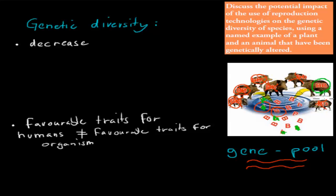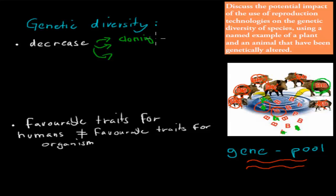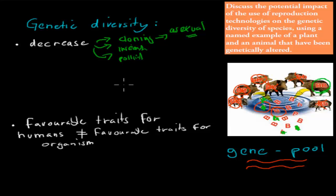Genetic diversity generally decreases with all of the reproductive technologies. With cloning, we pick the ones we want and have asexual reproduction, so the clones are identical. With artificial insemination or artificial pollination, we basically select the ones we want — we pick the favorable traits, and all others are ignored. So eventually all the offspring will have the same favorable trait, but the other traits are lost.